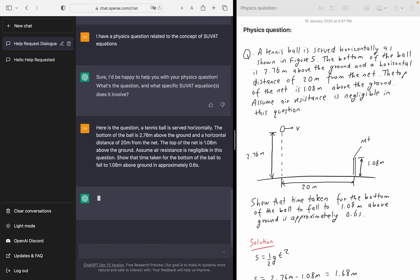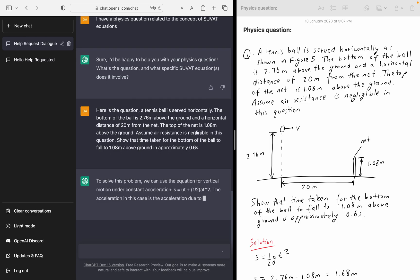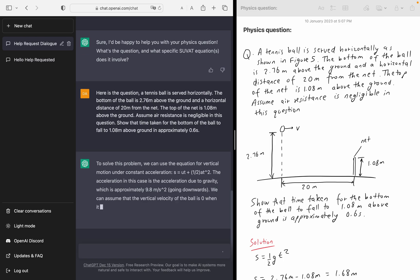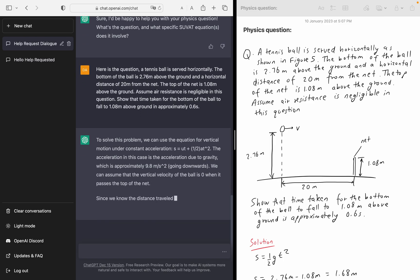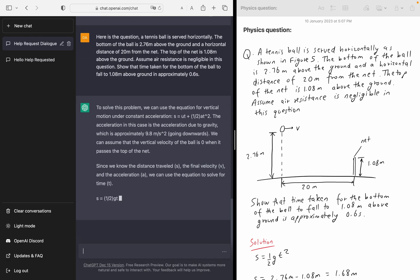So we're going to send this and see how fast this thing responds. Oh wow, it just responds pretty quick. So it's saying, to solve this problem, we can use the equation for vertical motion under constant acceleration. So it's mentioning S is going to UT plus half AT squared. The acceleration in this case is the acceleration due to gravity, which is approximately 9.8 meters per second squared, going downwards.